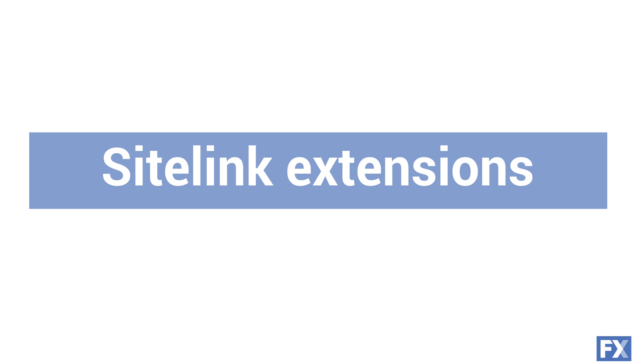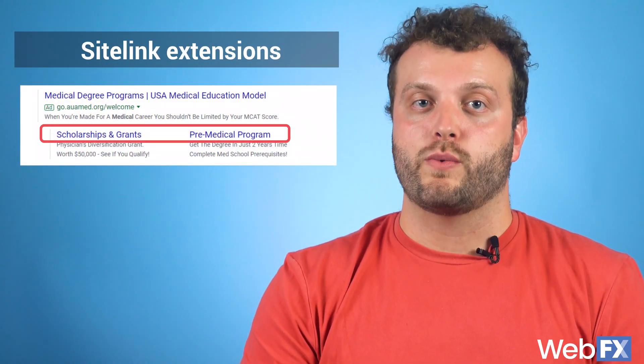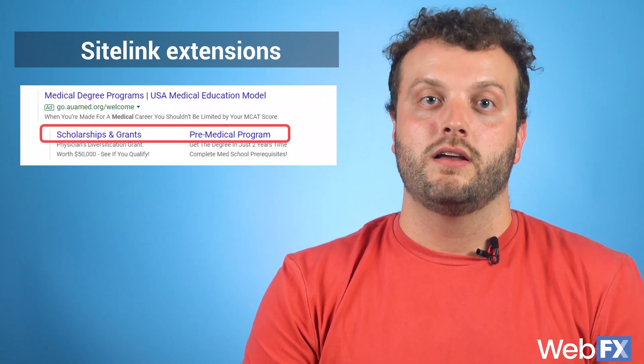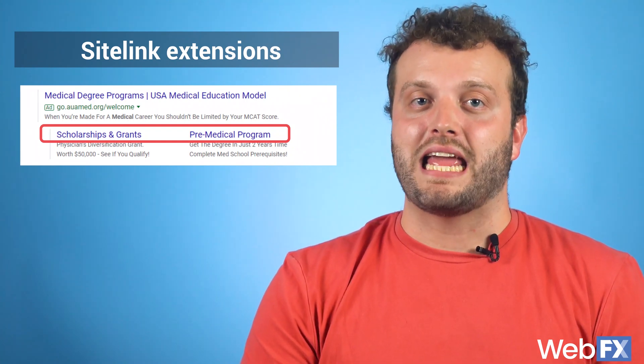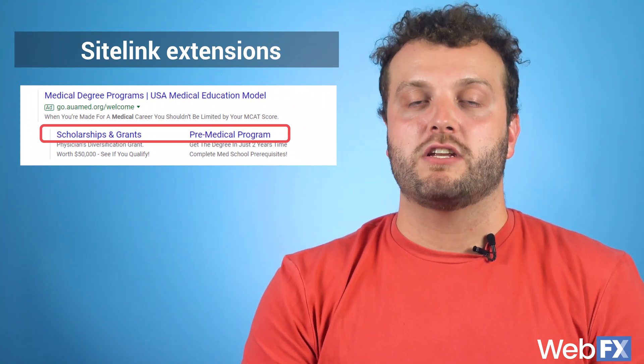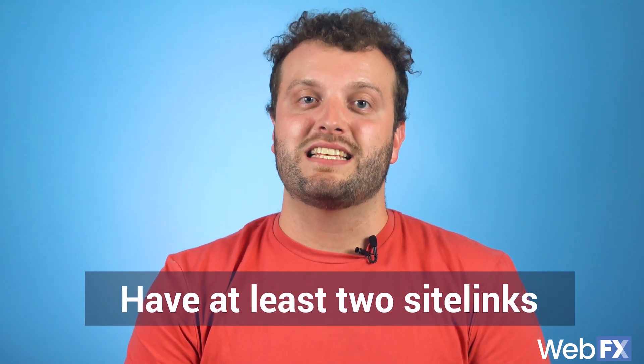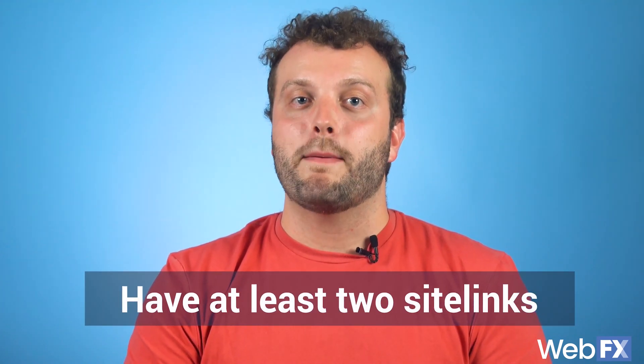Sitelink extensions let you include links to different pages on your website in addition to the main ad link. Using the university example again, you can include sitelinks to different degree programs or informational pages on your site. You must have at least two sitelinks when using sitelink extensions, with the ability to show a max of eight. On mobile, sitelinks appear either vertically or as a carousel. You'll only see the vertical format on a top-ranked ad, while the carousel will appear for ads below the top ad.